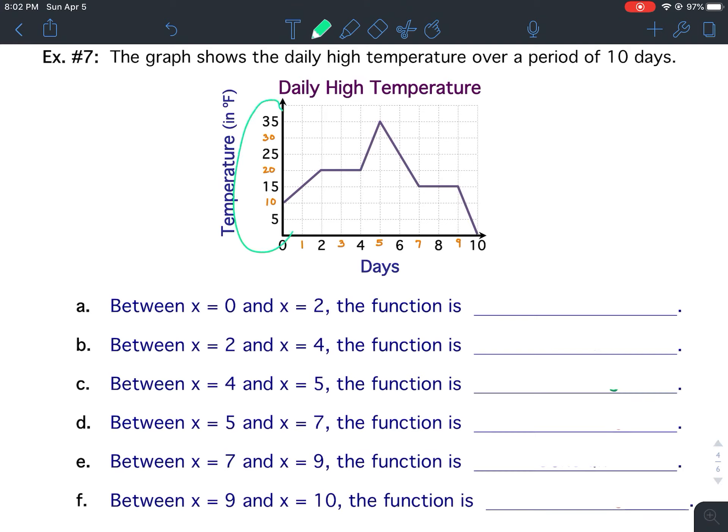Over here on the y-axis, this would be your degrees in Fahrenheit: 5 degrees, 10 degrees, 15, and so forth. On the bottom, this is your days. After one day, it's recorded. After two days, the temperature is recorded, and then they connected all the points to get our graph.